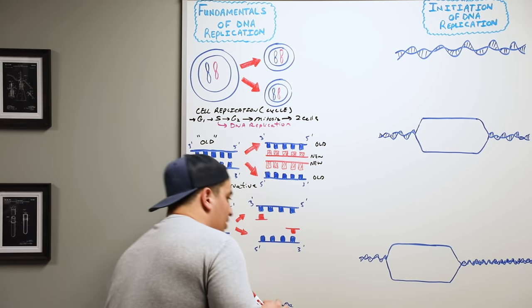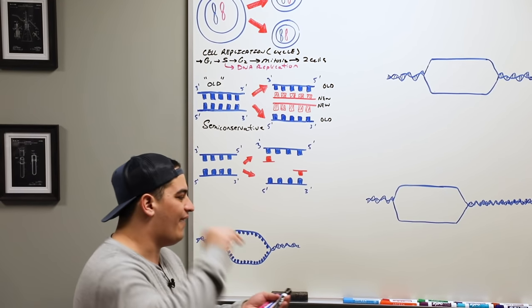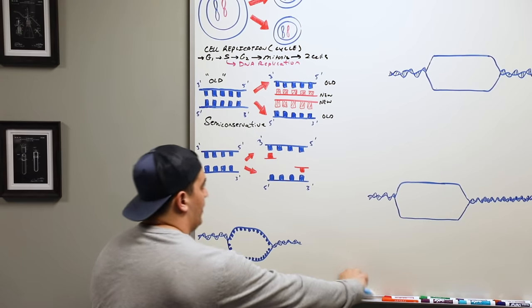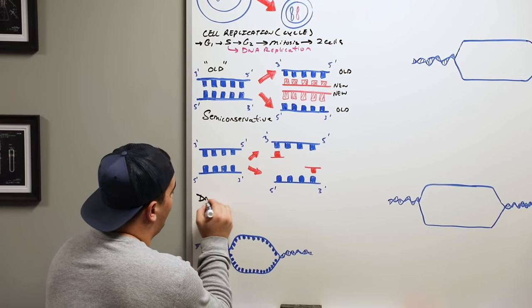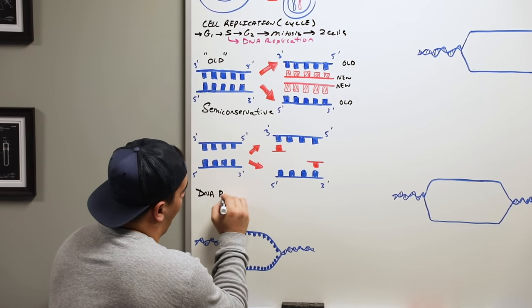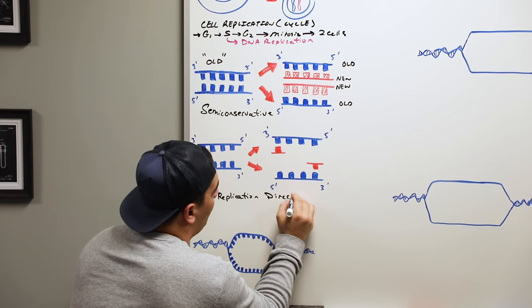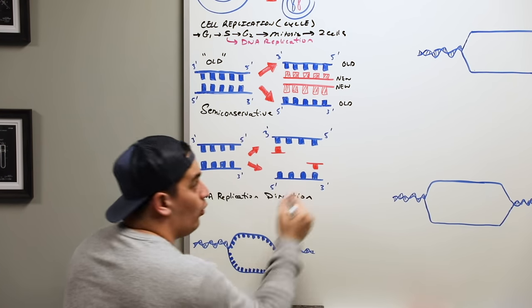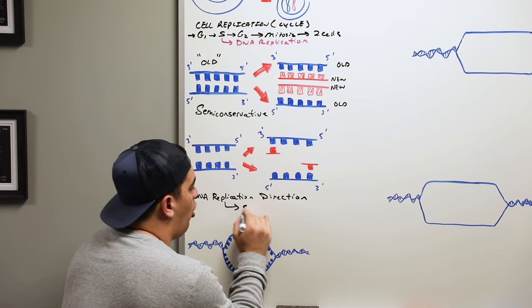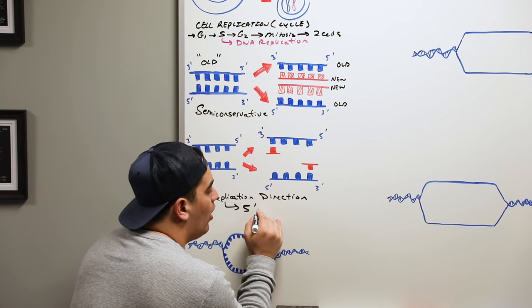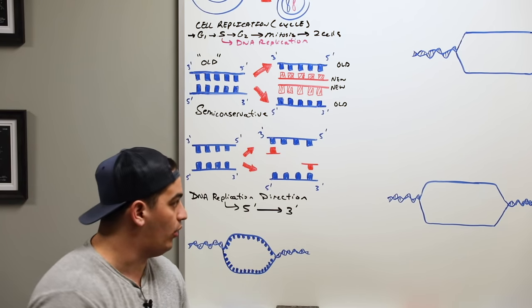The next really important thing is that DNA replication occurs in a very specific direction. DNA replication has to occur — the direction of replication is very important, and we'll mention it a lot throughout this lecture. DNA direction always has to occur from the 5' end to the 3' end. I can't stress that enough — it's super important and it's going to come up a lot.